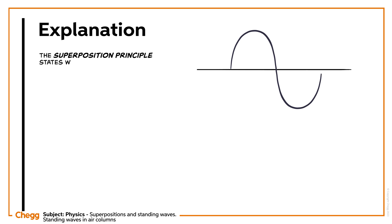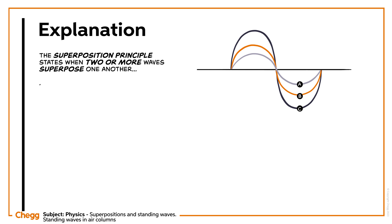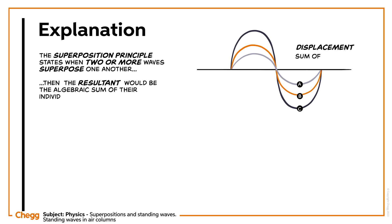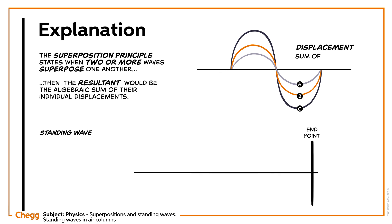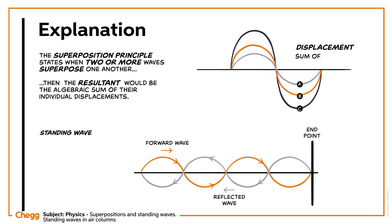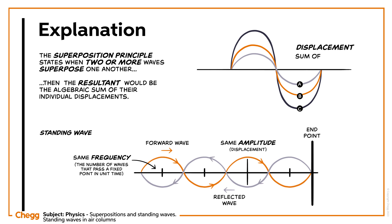The superposition principle states that when two or more waves superpose one another, the resultant displacement would be the algebraic sum of individual displacements. Standing waves are formed due to the superposition of a forward wave and its reflected wave. In other words, standing waves are produced when two waves of the same amplitude and frequency moving in opposite directions superpose one another.